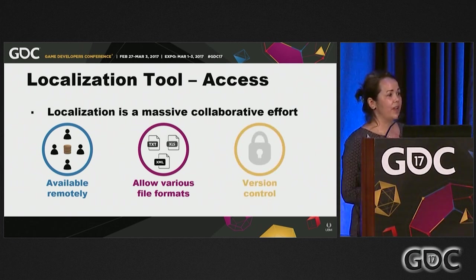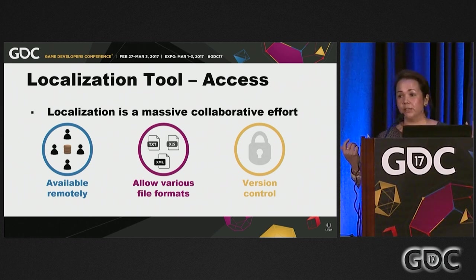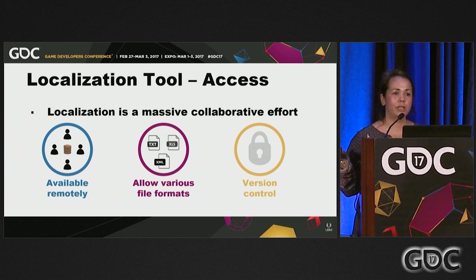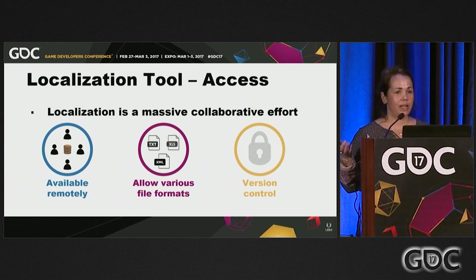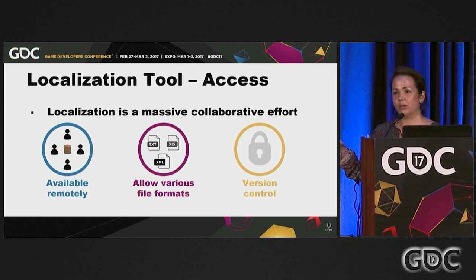With LAMS, there is no risk of overwriting assets because the tool will prevent the tester, for instance, from updating strings that the translator is already busy working on. Transparency on what lines are being worked on by whom means no delays, no unnecessary duplication of work between tester and translator, and no unnecessary costs.